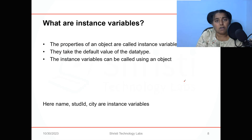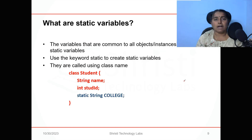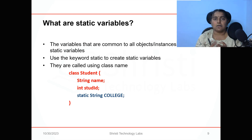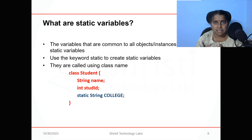Instance variables can be called using an object. In this example, name and city will be null, and student ID will be zero. Next, what are static variables? The variable that is common to all the objects in a class is called a static variable. In case of static variables, you will have only one copy for that particular class. For the student class, what can be common for all student objects? The college name, the college timings, the break timings — these are common for all student objects.